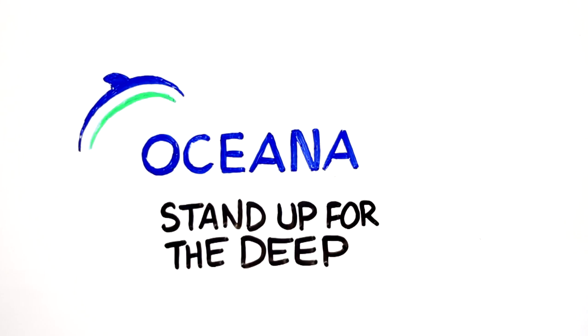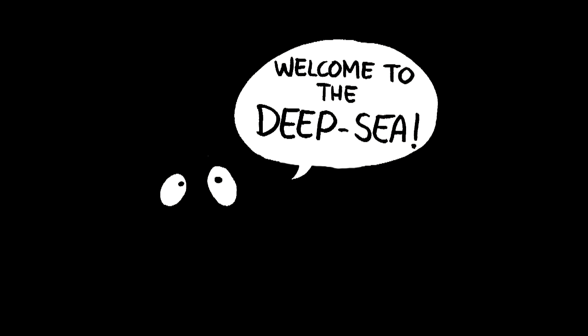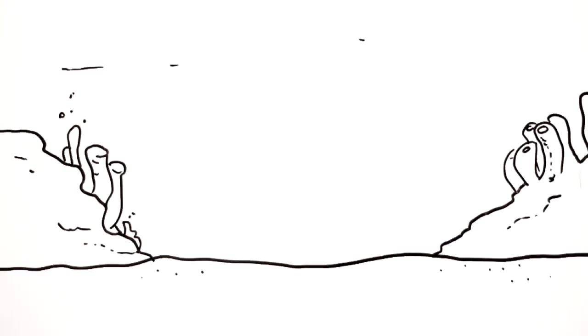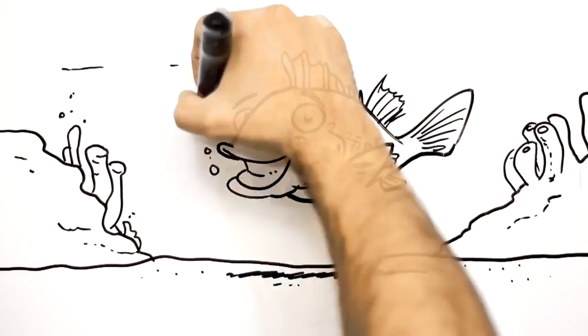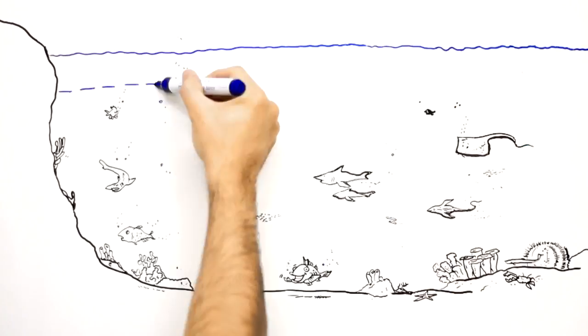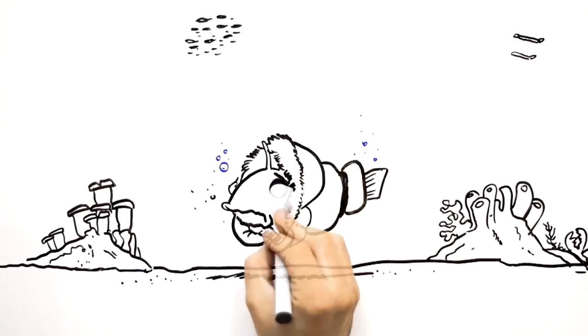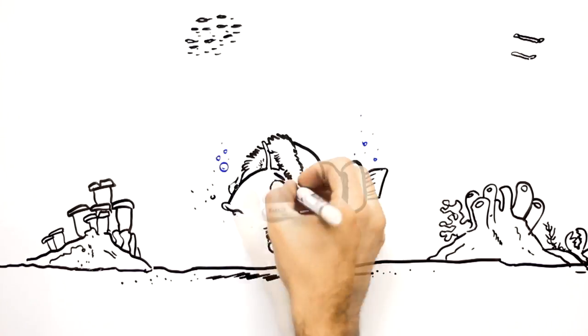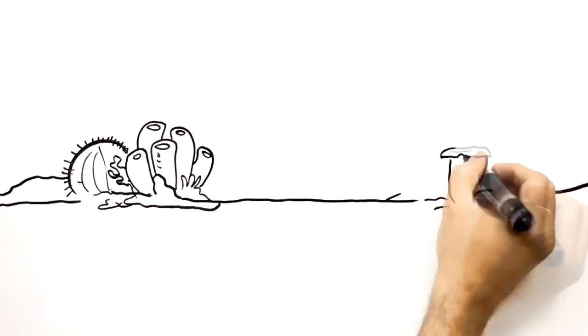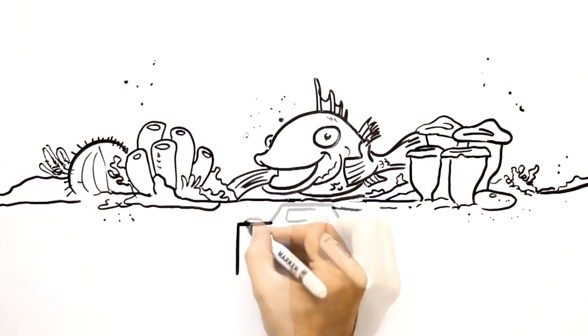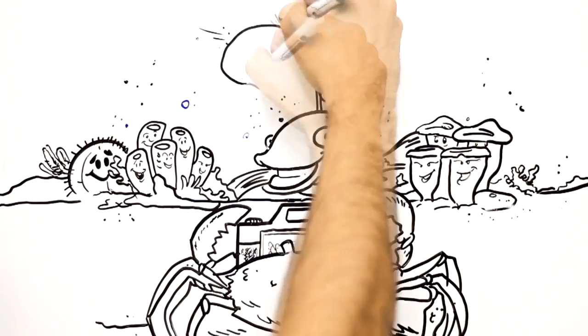Stand up for the deep. Welcome to my home, welcome to the deep sea. Sorry, let's turn on the light. Sunlight doesn't reach down here. The deep sea begins at 200 meters below the ocean surface and it's a very cold place. But you know what, we have beautiful sponges and corals here. We like them because they give us shelter and food.